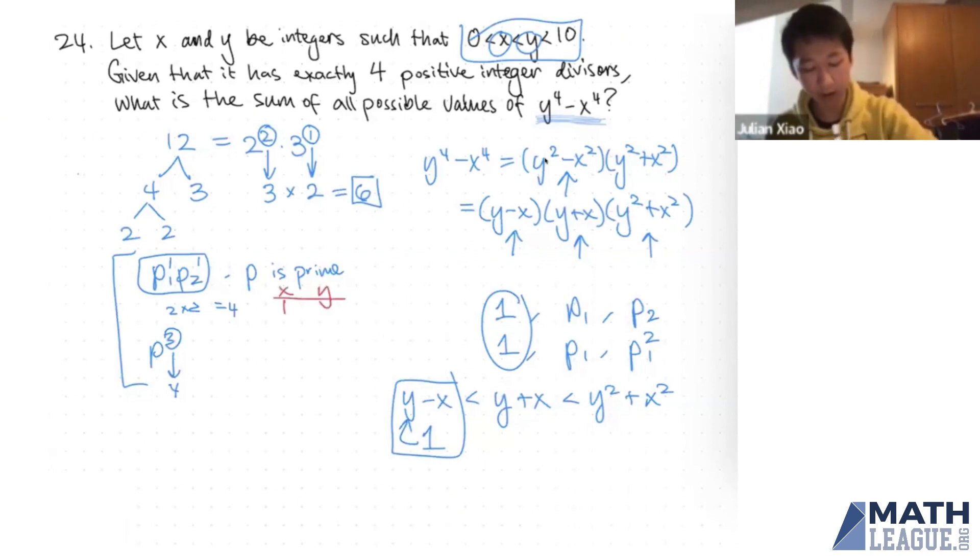In particular, we can have x and y be 1, 2, 2, 3, 3, 4, 4, 5, 5, 6, 6, 7, 7, 8, 8, 9. And these are our only possible combinations of x and y.